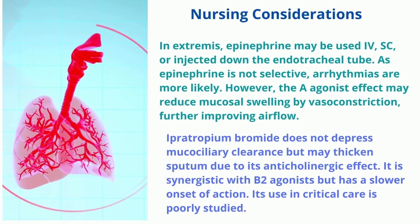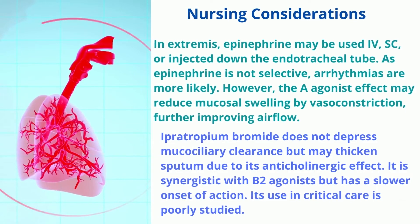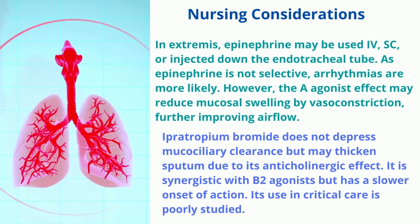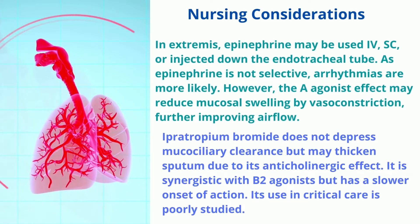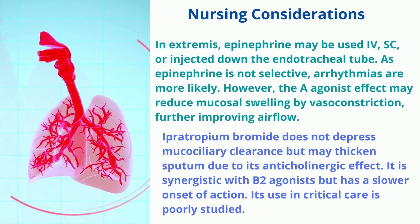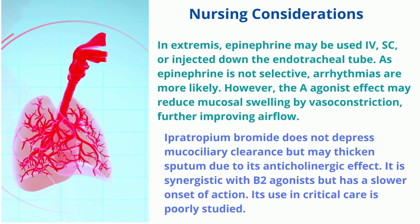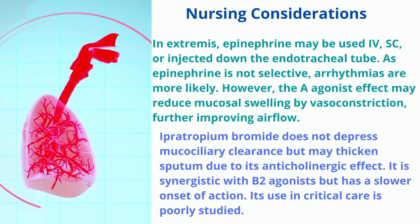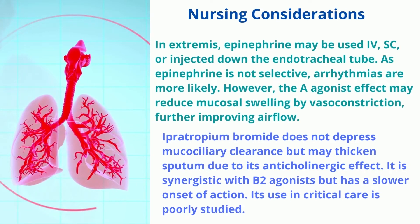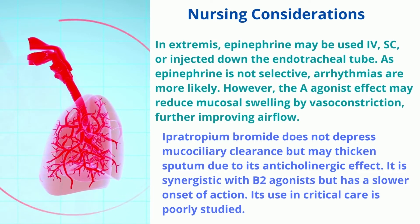Higher or lower flow creates the wrong particle size for drug delivery. In extremis, epinephrine may be used IV, subcutaneously, or injected down the endotracheal tube. As epinephrine is not selective, arrhythmias are more likely. However, the alpha-agonist effect may reduce mucosal swelling by vasoconstriction, further improving airflow. Ipratropium bromide does not depress mucociliary clearance but may thicken sputum due to its anticholinergic effect. It is synergistic with B2 agonists but has a slower onset of action. Its use in critical care is poorly studied.